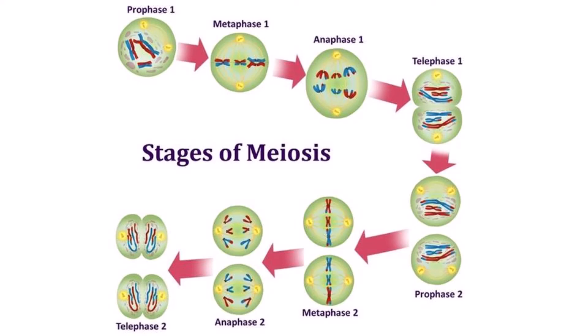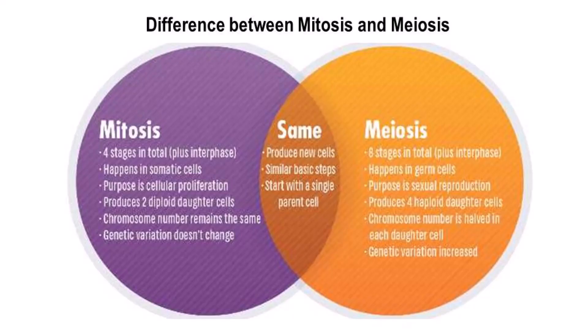The process of gamete production and spore formation occurs by meiosis. In this type of cell division, four haploid daughter cells are formed from one diploid cell. During this cell division, crossing over occurs between homologous chromosomes and thereby genetic recombination occurs. Due to this, all four daughter cells are genetically different from the parent cell and from each other.